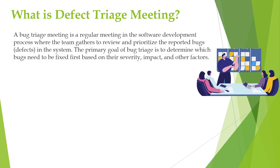The bug triage meeting consists of a team that includes developers, testers, project managers, and sometimes even stakeholders. They gather to discuss the reported bugs. Each reported bug is discussed here — the team reviews the bug report, its descriptions, steps to reproduce, and other relevant information.